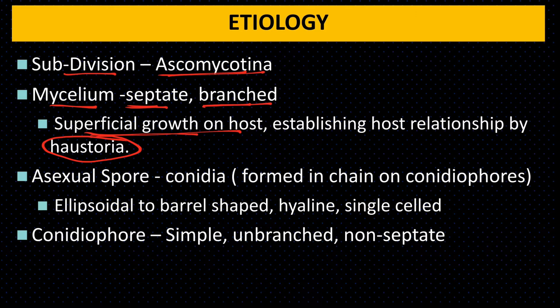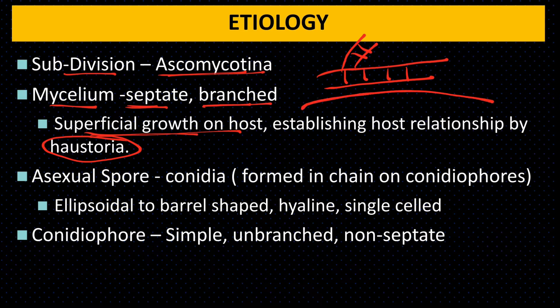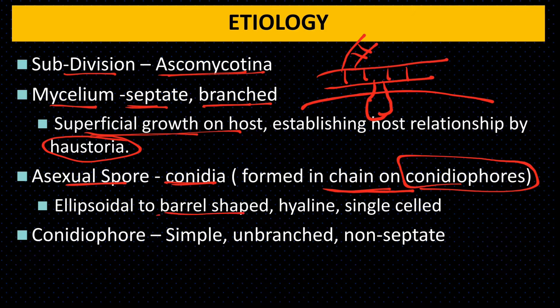The mycelium of Blumeria graminis is septate, branched, and present on the host surface. This fungus does not enter the host cells; instead it forms haustoria to gain nutrition from the plant. Asexual spores (conidia) are formed in chains on conidiophores. Conidia are barrel-shaped, unicellular, and hyaline. Conidiophores are simple, unbranched, and non-septate.